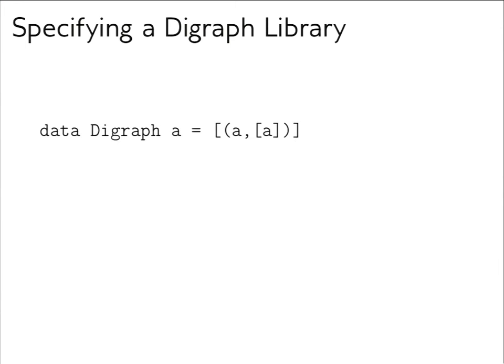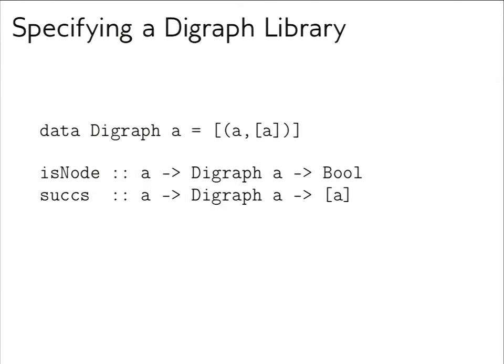We have a digraph data type with parametric node labels, represented by a list of pairs where the first element is the source node and the second element is the destination nodes (successors). There are two functions: `isNode`, which takes a node identifier and a graph and returns whether that's a node in the graph, and `successors`, which takes a node and a digraph and returns the successors of that node.